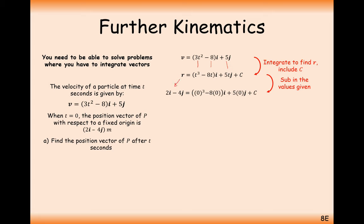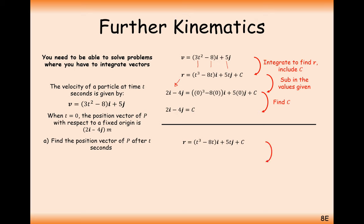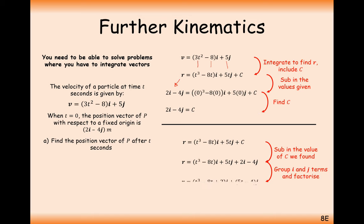Integrating each component separately, plugging in t equals 0 and the position vector 2i minus 4j on the left-hand side, we get c equals 2i minus 4j. Writing the full answer with c gives: r equals (t cubed minus 8t + 2)i plus (5t minus 4)j.